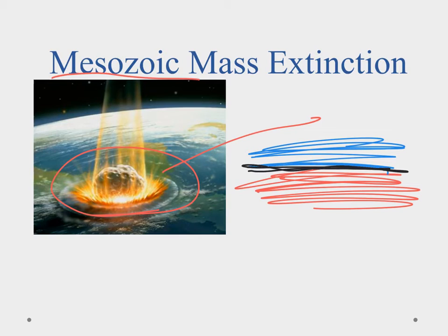The big question for years was: if this large asteroid hit, where did it hit? With satellite technology, we've actually been able to find the impact crater — it's in the Gulf of Mexico near the Yucatan Peninsula. That's it for this video. You'll learn more in the lesson, good luck on the quiz, and we'll see you in the next video.